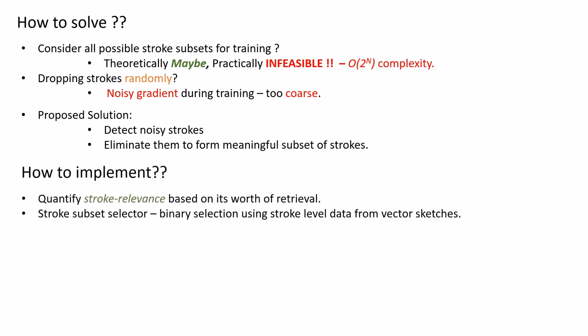To implement this, we propose a mechanism to quantify the importance of every stroke present in each stroke set, based on the extent to which that stroke is worthy for retrieval. Essentially, we propose a sketch stroke subset selector that learns to determine a binary action for every stroke, whether to include that stroke or not.